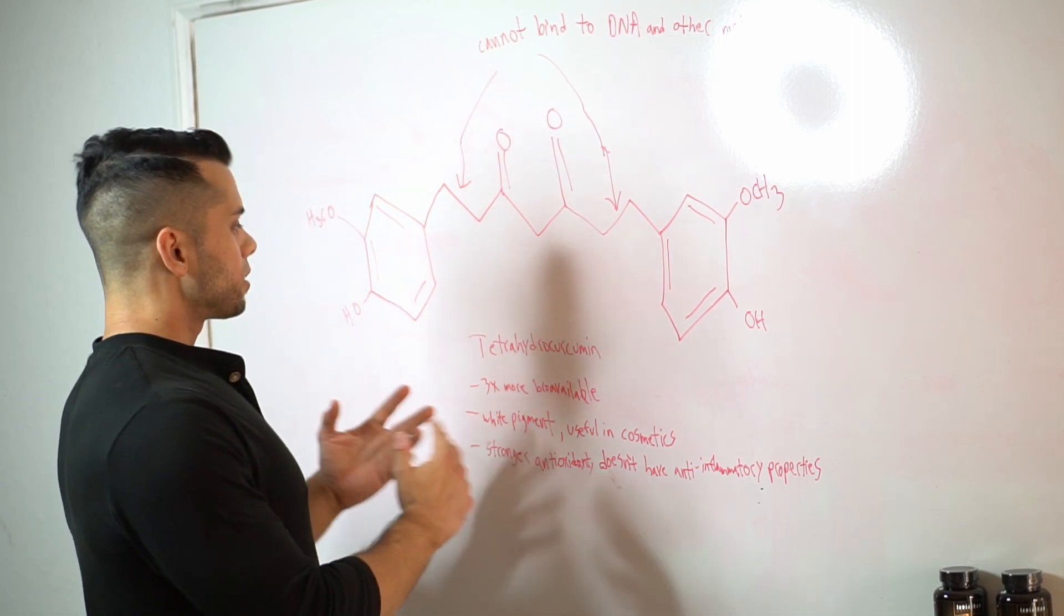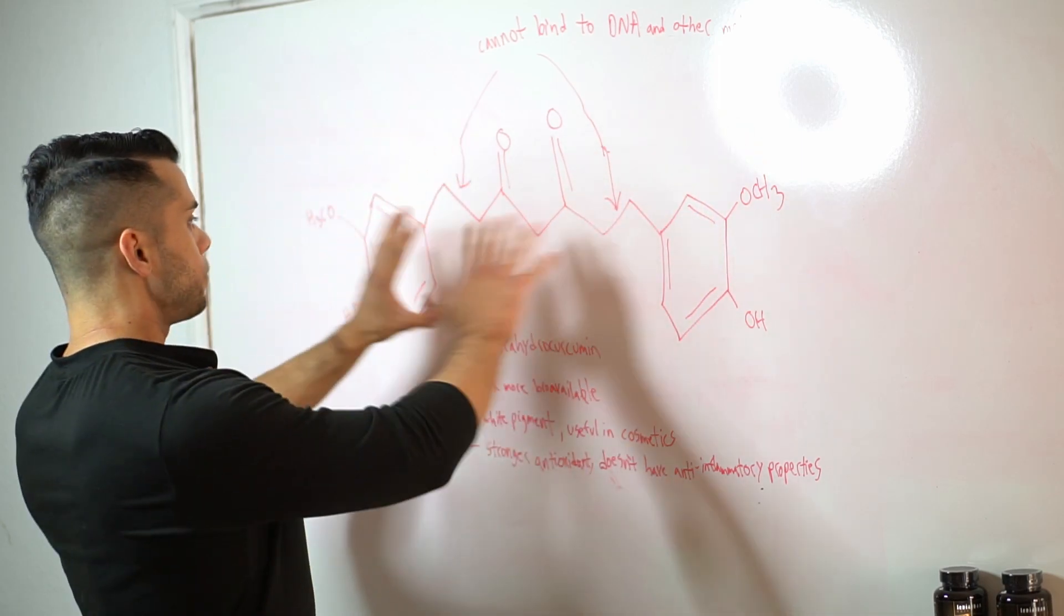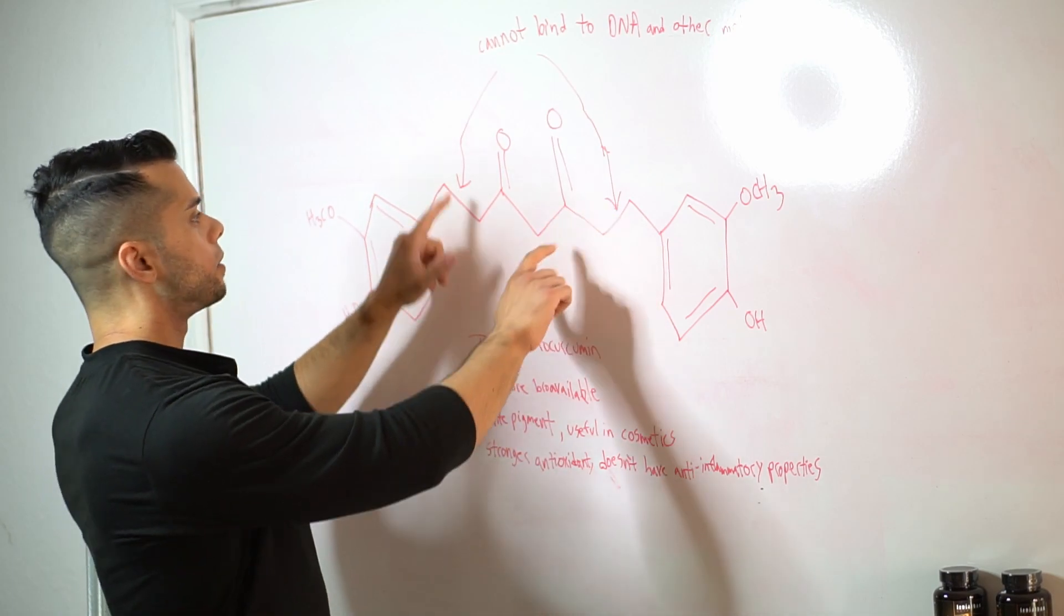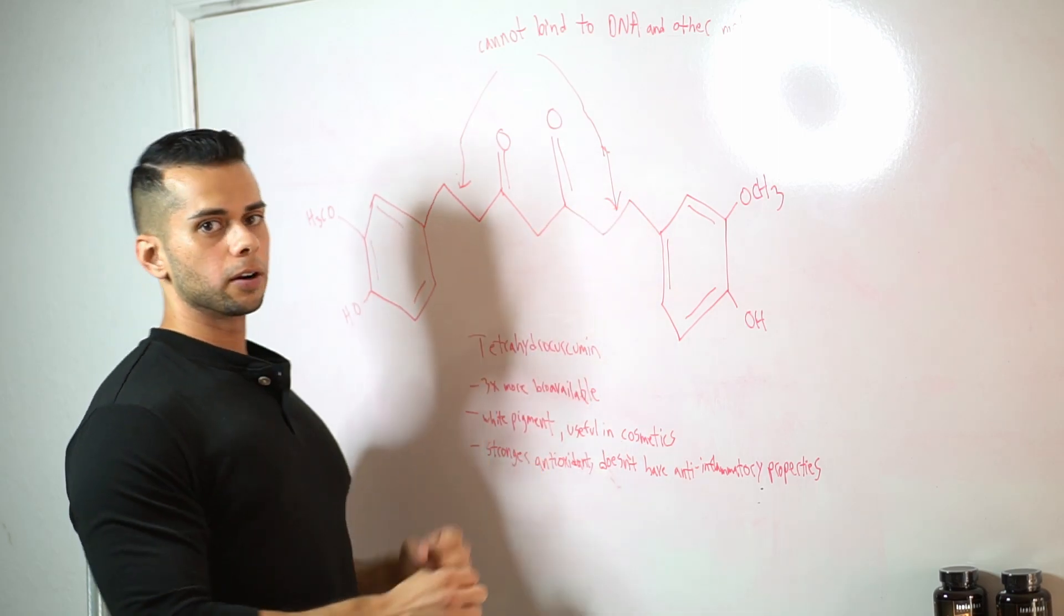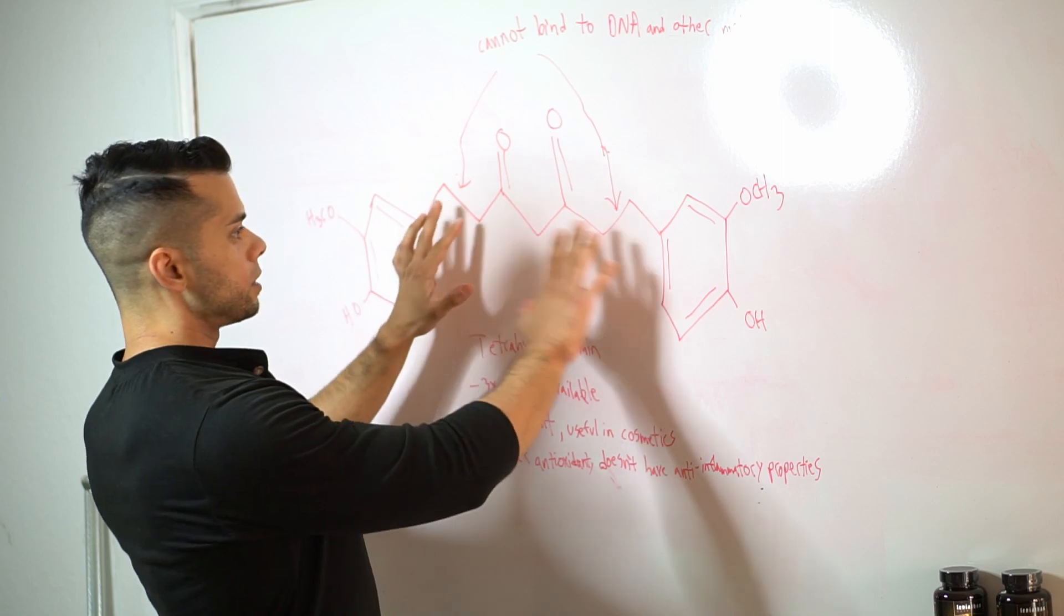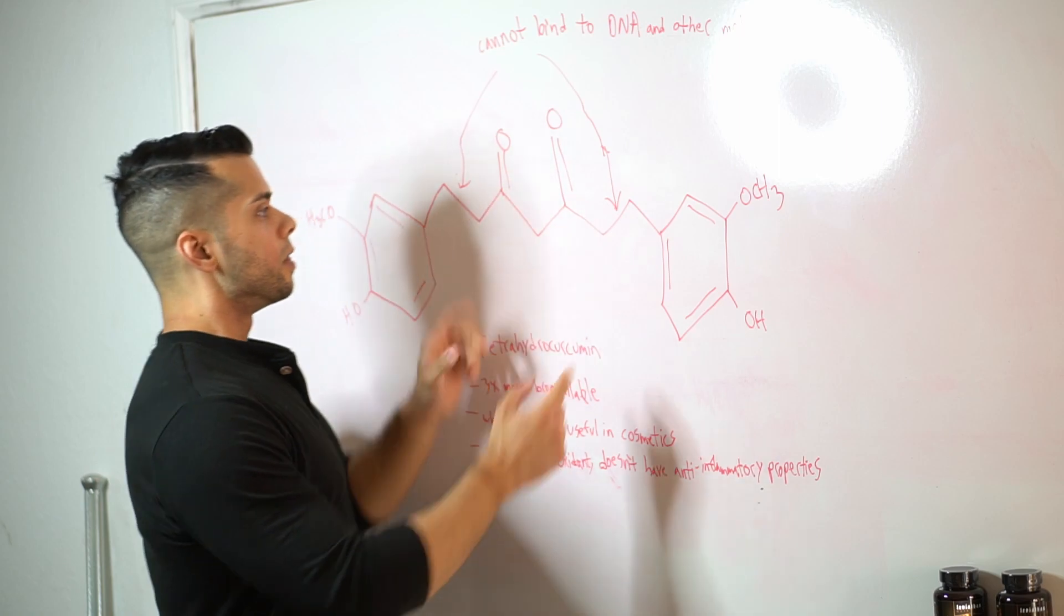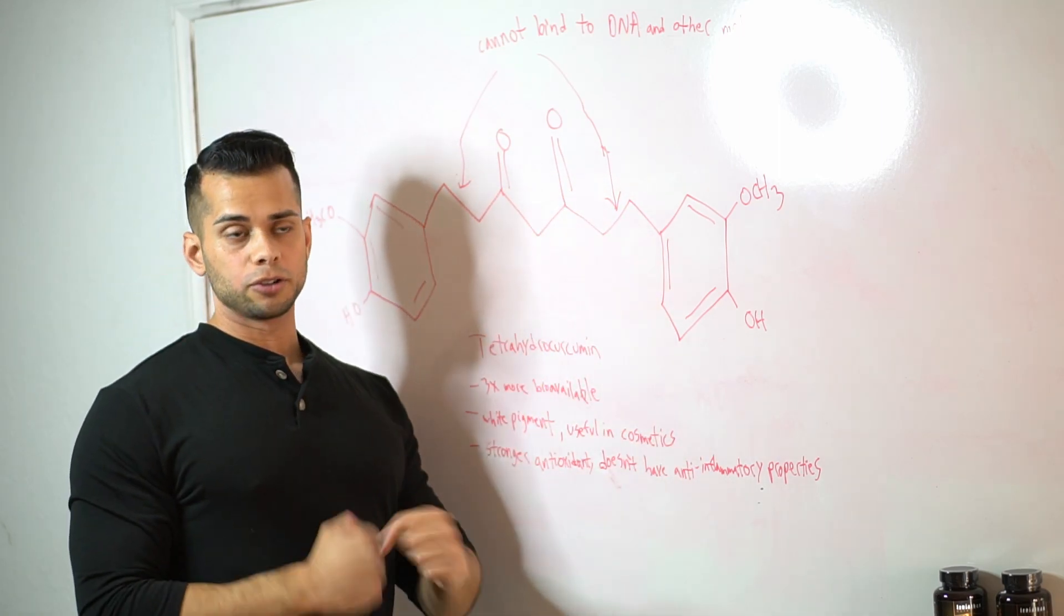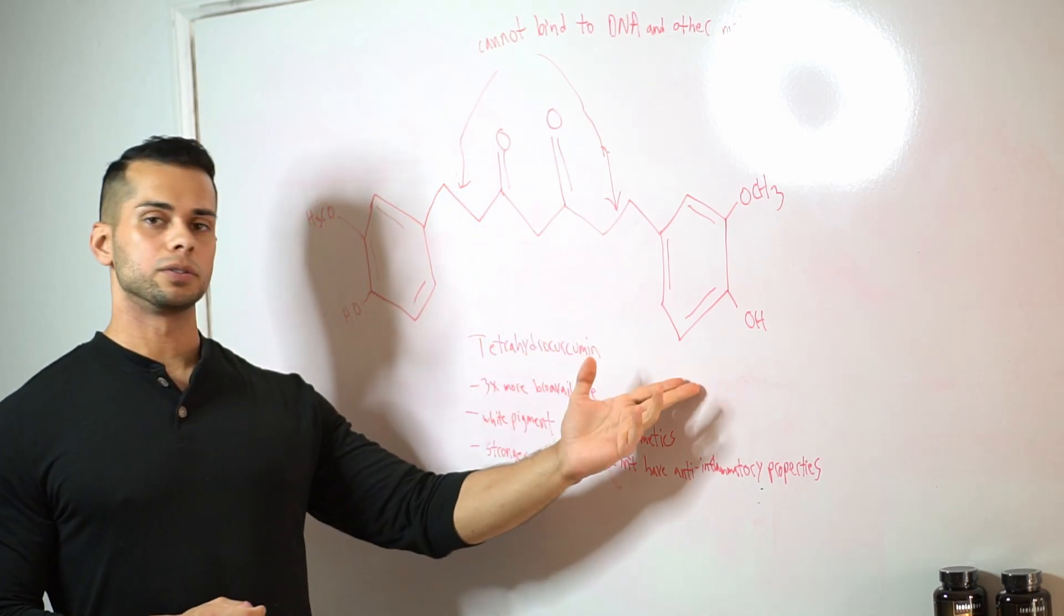So what the difference is between tetrahydrocurcumin and ordinary curcumin is everything in the structure is the same except right here. In the structure of curcumin we have a double bond here as well as a double bond here, so those two double bonds have been reduced in this structure, thus the name tetrahydrocurcumin because those double bonds have been replaced by, in essence, four hydrogens, two on each side,